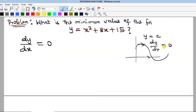At the point where there is a stationary or turning on a particular function, the derivative of that function with respect to the independent variable is always equal to zero.